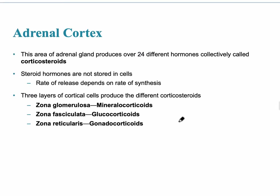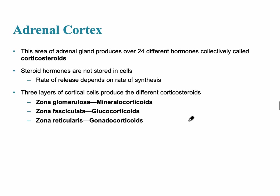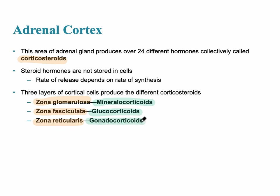The adrenal cortex produces over 24 different hormones, collectively called corticosteroids. The three different layers are called the zona glomerulosa, zona fasciculata, and zona reticularis from outer to innermost. The zona glomerulosa produces a group of hormones called the mineralocorticoids. The zona fasciculata produces glucocorticoids, and finally the innermost layer, the zona reticularis, produces the gonadocorticoids.